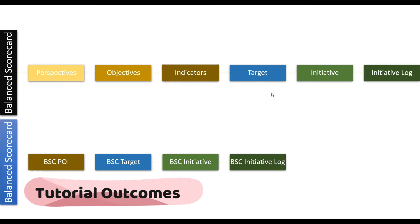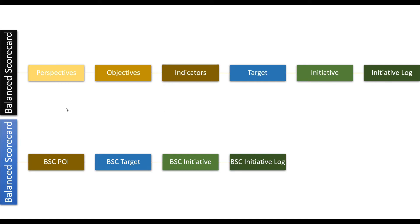Balanced Scorecard has these entities: perspectives, objectives, indicators, targets, and initiatives. Every perspective has objectives — the relationship between perspectives and objectives is one-to-many. Each objective has many indicators, and each indicator has many targets.